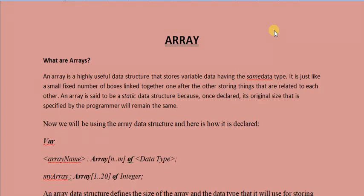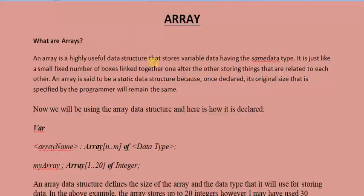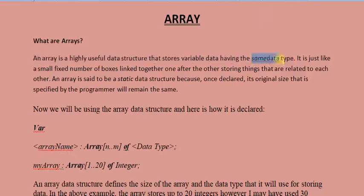An Array is a highly useful structure that stores variable data having the same data type. An Array is useful for storing data, and those data have to be of the same data type. Consider an egg tray — you know that you will be storing eggs in an egg tray. That is the whole structuring of an Array. That's what it's basically about.